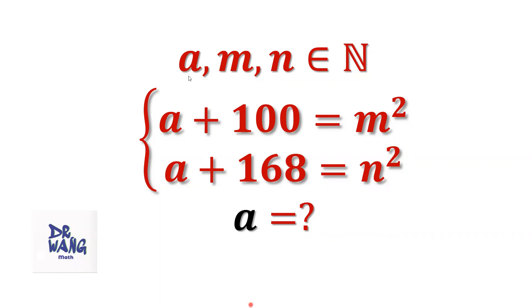If A, M, N are positive integers, A plus 100 equals M squared, and A plus 168 equals N squared. What is the value of A?